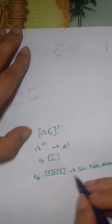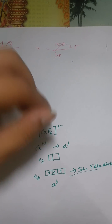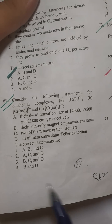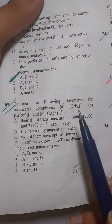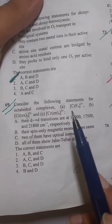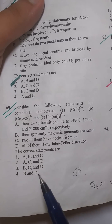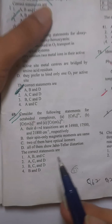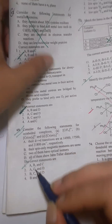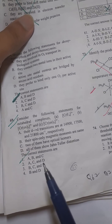The D3 configuration does not show Jahn-Teller distortion. The statement D says all of them show Jahn-Teller distortion, but we've already calculated that CrF₆³⁻ does not. So all options containing D are incorrect, and the correct answer is A.